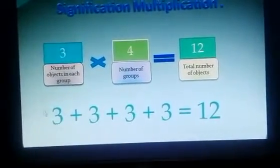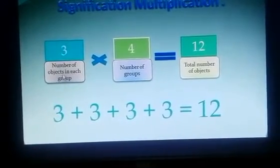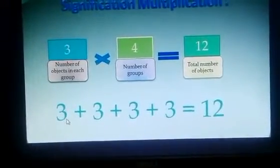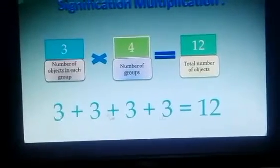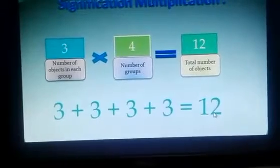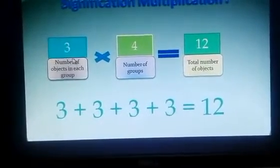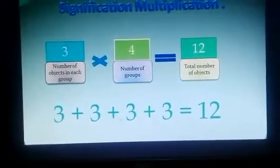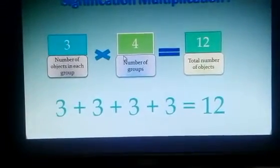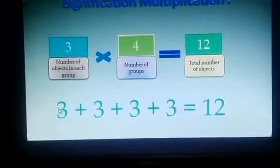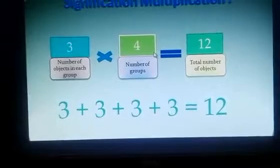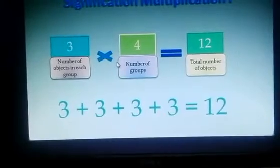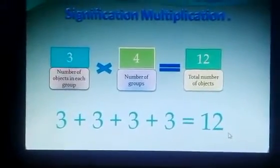In previous class, we have done repeated adding and we have gathered knowledge about Multiplication. Here, 3 is the number of objects in each group, 4 is the number of groups, and 12 is the total number of objects. This is the form of repeated adding. Instead of doing this repeated adding, if we multiply 3 with 4, we get 12. Multiplication is the shortest form of repeated adding.